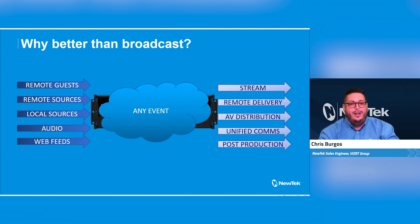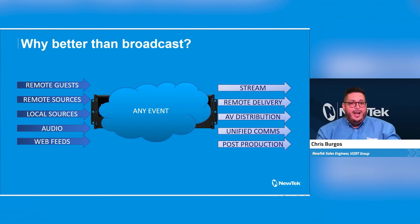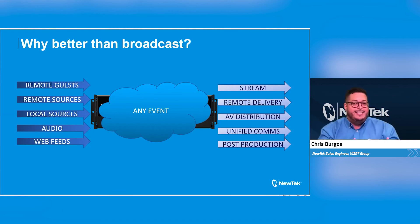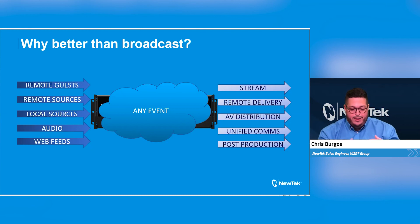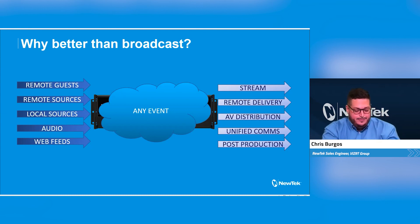Last but not least, because we are doing all of this with remote enablement, the TriCaster series all have a KVM feature, so it can be any event, anywhere. You can interface with your TriCaster, bring in remote guests, and you don't even have to be on site with your system to leverage this immense workflow.